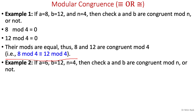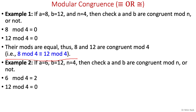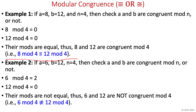Let's look at another example. If a equals 6, b equals 12, and n equals 4, then we need to check whether a and b are congruent mod n or not. So 6 mod 4 is 2 and 12 mod 4 is 0. Since the mods are not equal, therefore 6 and 12 are not congruent mod 4.